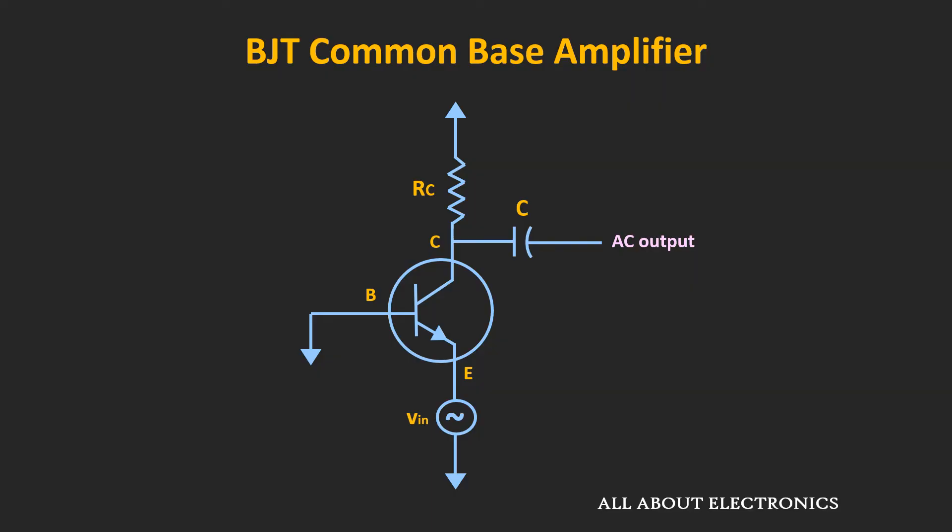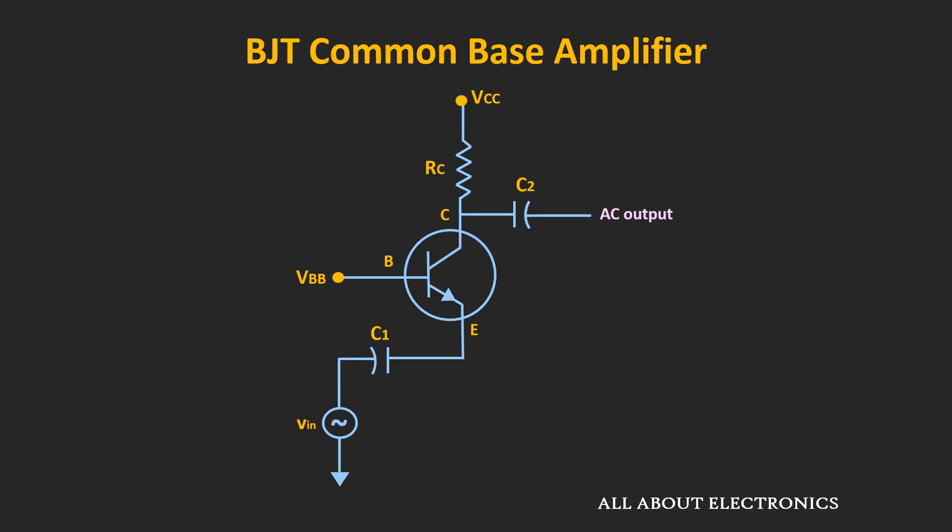Normally, when we connect the input signal, we apply it through the coupling capacitor, because through the coupling capacitor we can isolate the AC and the DC signals. If we connect the input signal as shown in the figure, then when we apply the input signal in this fashion, we know that for the DC signals this coupling capacitor will act as an open circuit. Because of that, there won't be any path for the biasing current, since the emitter terminal will act as an open circuit. So there won't be any bias current and there won't be any output signal.